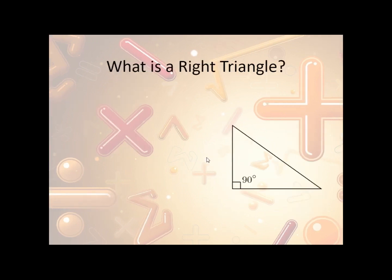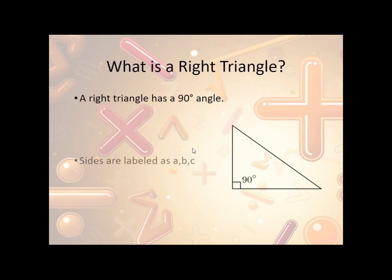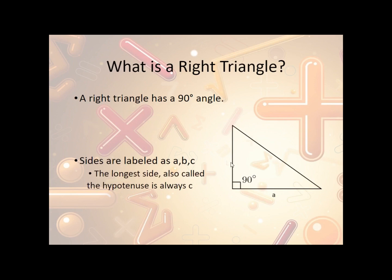What is a right triangle? A right triangle has a 90-degree angle, so it forms a perfect L shape. The sides are labeled A, B, and C. A and B are the two smaller sides — it doesn't matter which one's which. The longest side is C, and that is the hypotenuse. So A and B can be either leg, but C is always the hypotenuse.